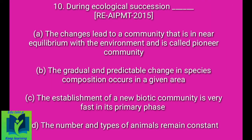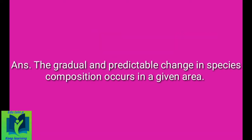During ecological succession: Option A: The changes lead to a community near equilibrium with the environment, called a pioneer community. Option B: The gradual and predictable change in species composition occurs in a given area. Option C: The establishment of a new biotic community is very fast in its primary phase. Option D: The numbers and types of animals remain constant. Answer: The gradual and predictable change in species composition occurs in a given area.